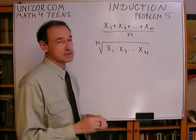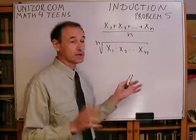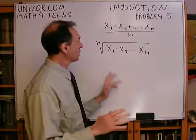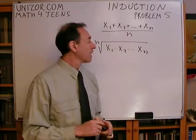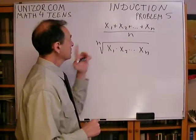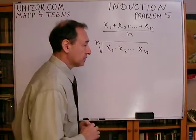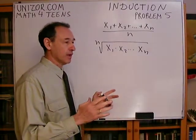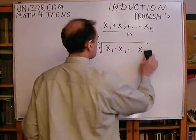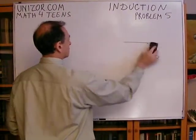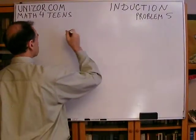We'll talk about positive numbers just because we don't want to have something like a square root of negative numbers. So all numbers are positive, and the arithmetic average is greater than or equal to the geometric average. The problem is: let's prove it. First, let's start from a simple case — only two variables.